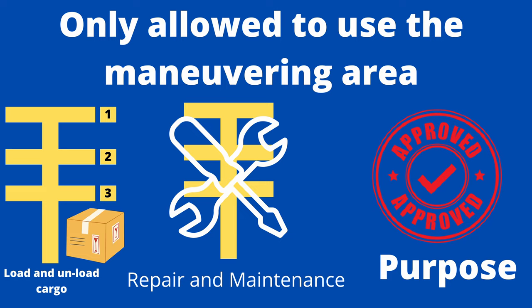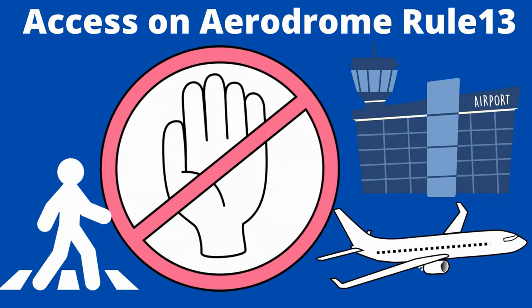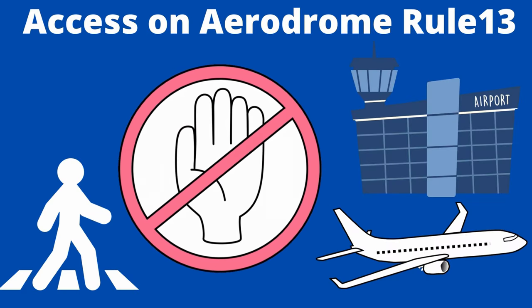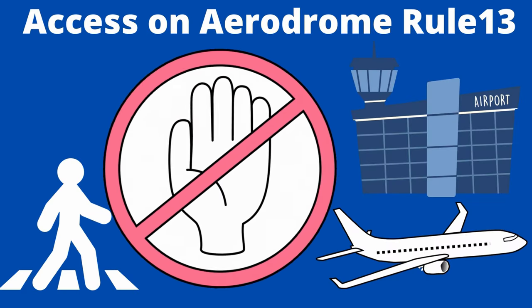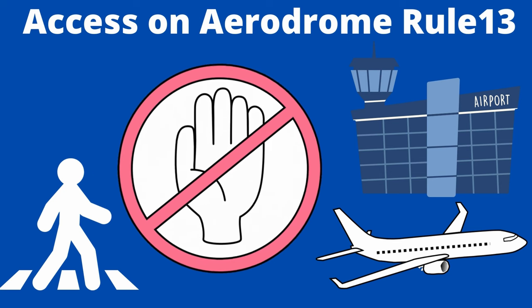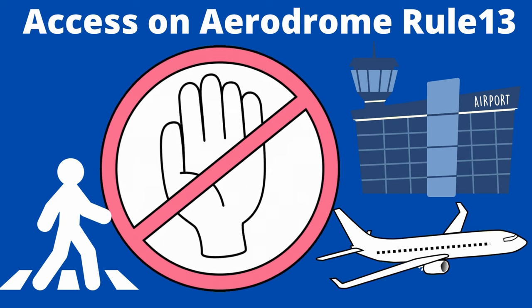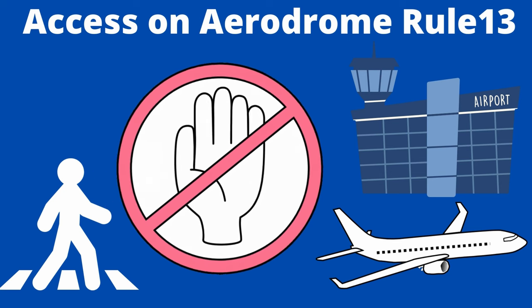Access on Aerodromes — Rule 13: a person shall not, without permission, go on to a part of an aerodrome provided for the use of aircraft. This applies to any part that is not a public right-of-way.